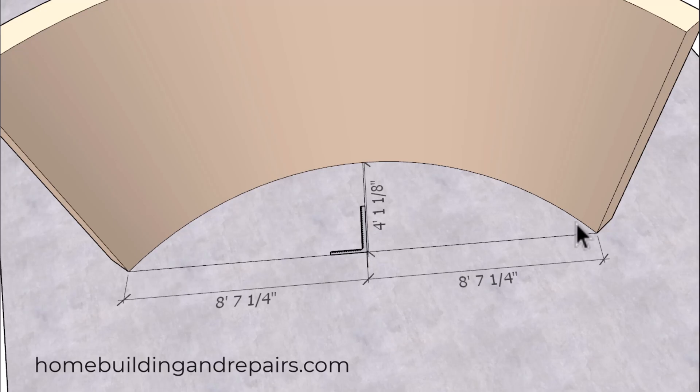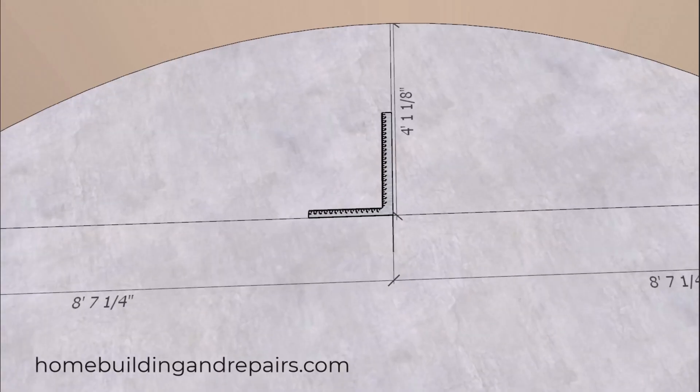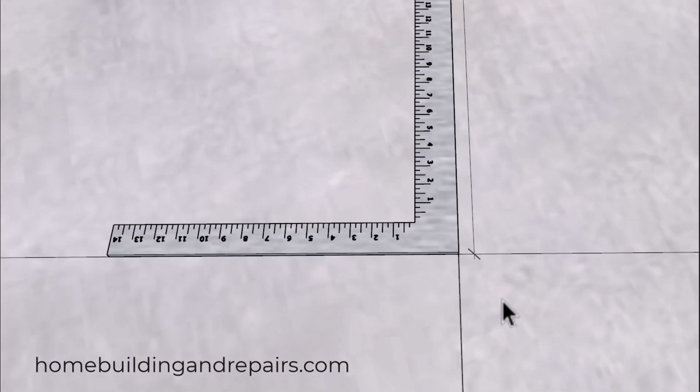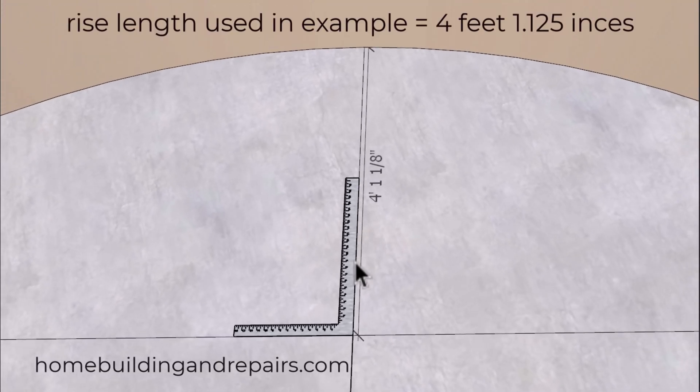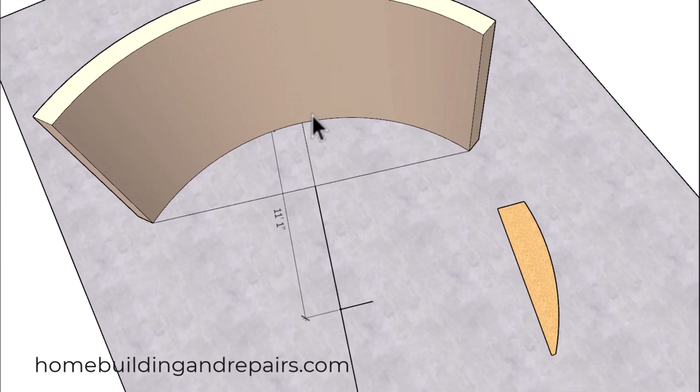Then we're going to divide this number in half and then square off of it at a 90 degree angle. You can use a framing square to draw that line. Simply line one edge up at the center point and the other edge along the straight line. Then draw a line from here to here and simply extend the line all the way to the wall. We can do the same thing to extend the line out so that after we do have our measurement, we can mark the center point of the radius.